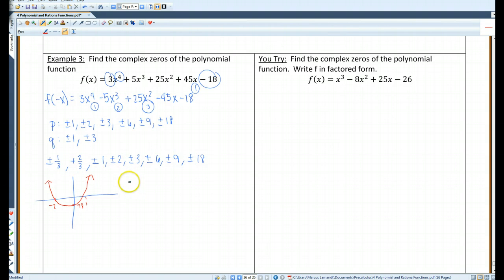So using synthetic division, I'm going to divide negative 2 into this: 3, 5, 25, 45, negative 18. Pull down the 3, negative 6, negative 1, 2, 27, negative 54, negative 9, positive 18, 0. So f of x equals x plus 2 times 3x cubed minus x squared plus 27x minus 9.